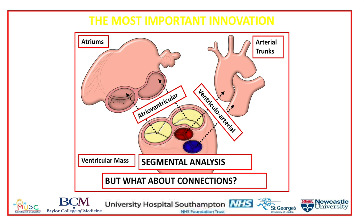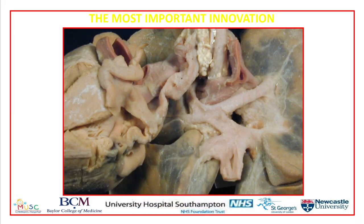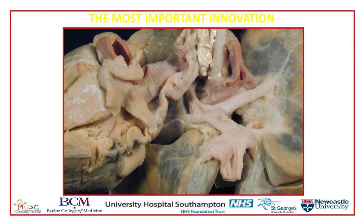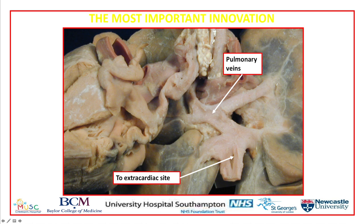To me, the real innovation is illustrated by the lesion you see in the picture on the screen at the moment. I hope you will all recognize that this is totally anomalous pulmonary venous connection. At the time of the segmental approach, the atrial chambers were recognized on the basis of their connections. Totally anomalous pulmonary venous connection illustrates the potential problem — if we said that the pulmonary veins defined the left atrium, then in this instance the liver would become the left atrium. And you all recognize immediately that that is not the case, and we can still see the left atrium.